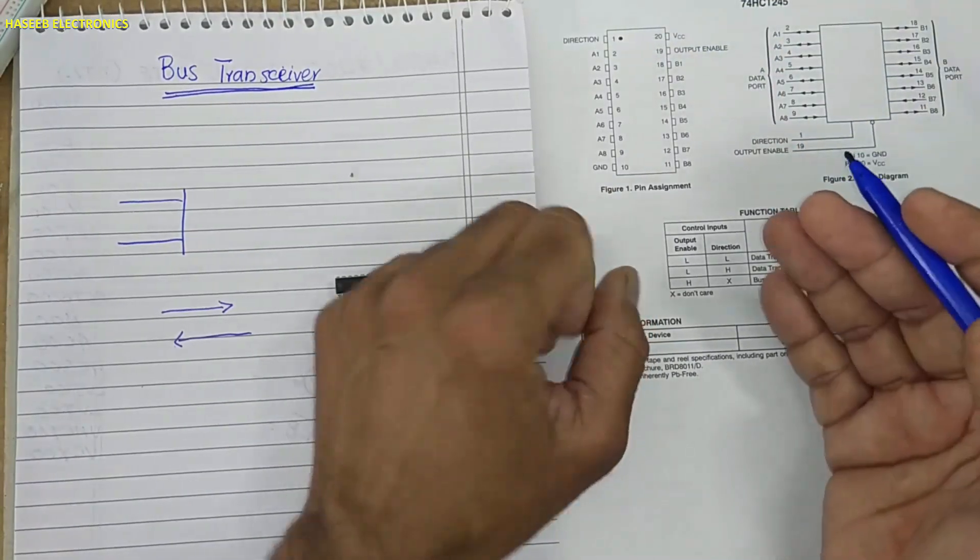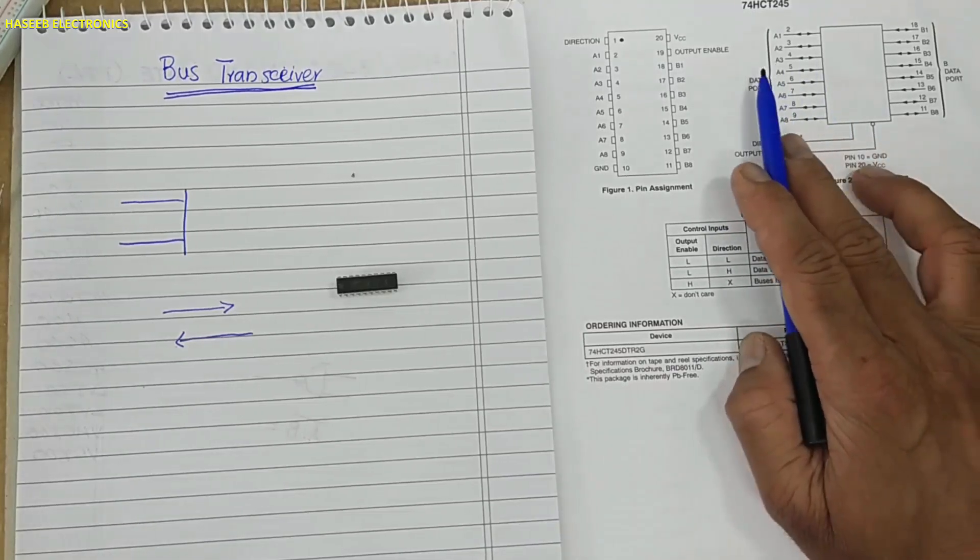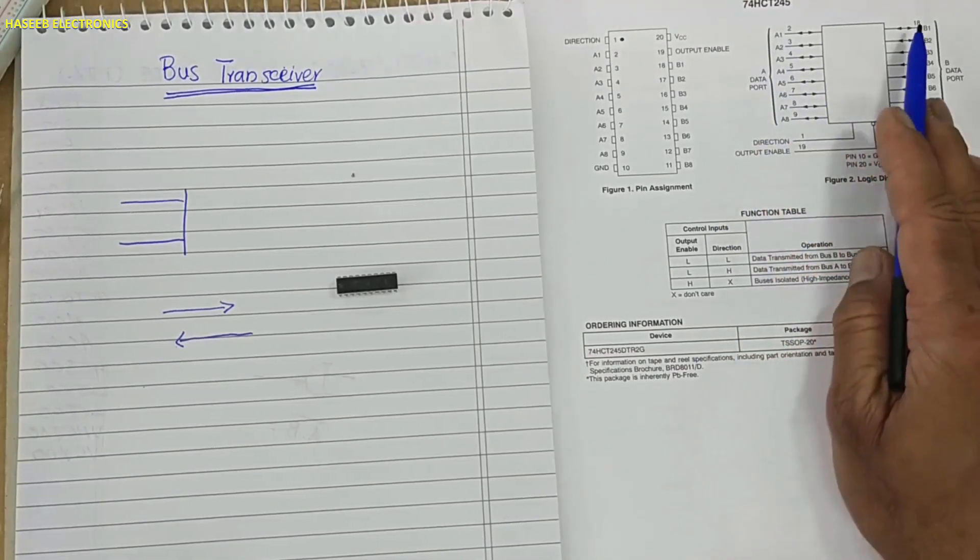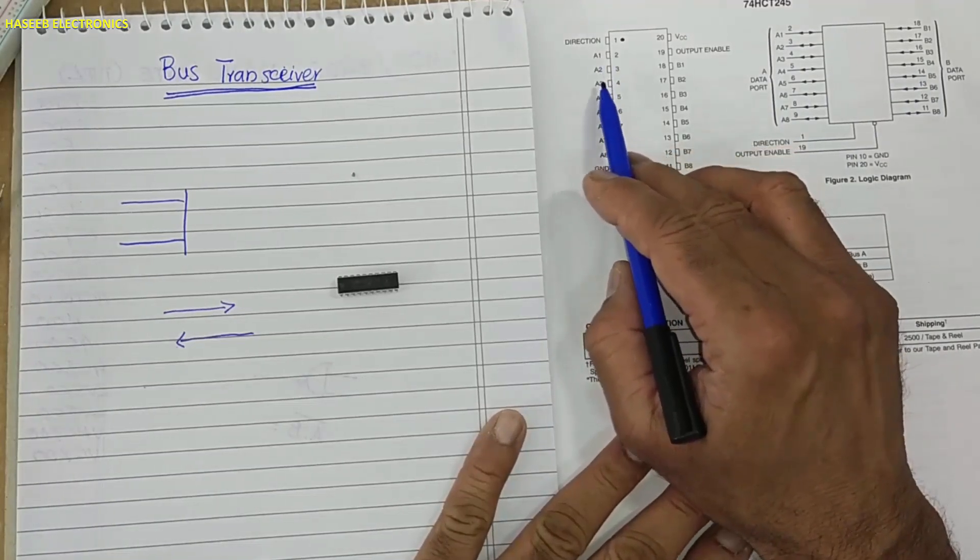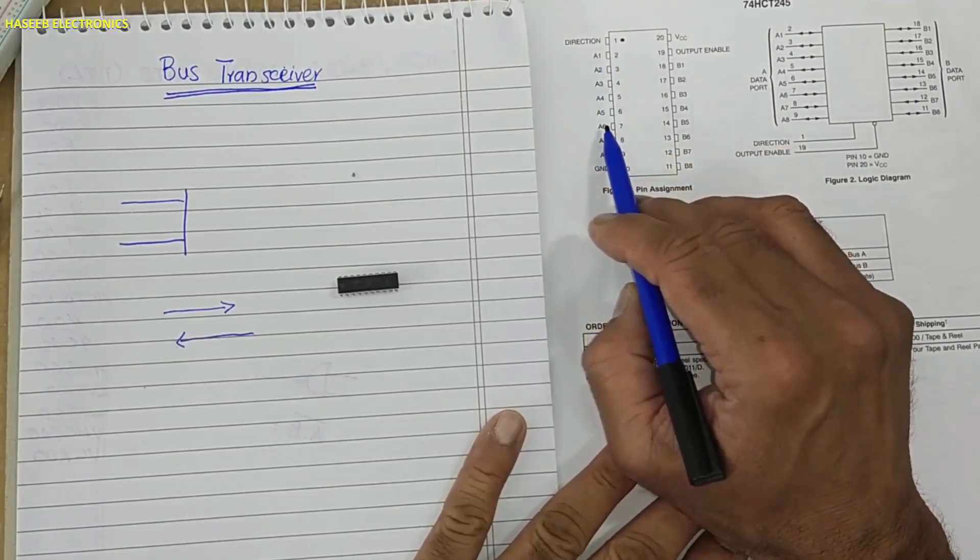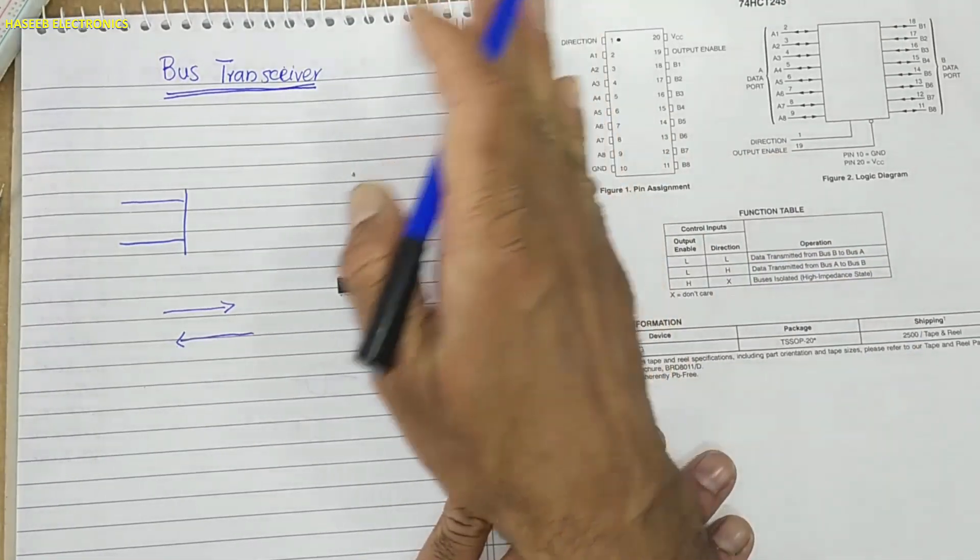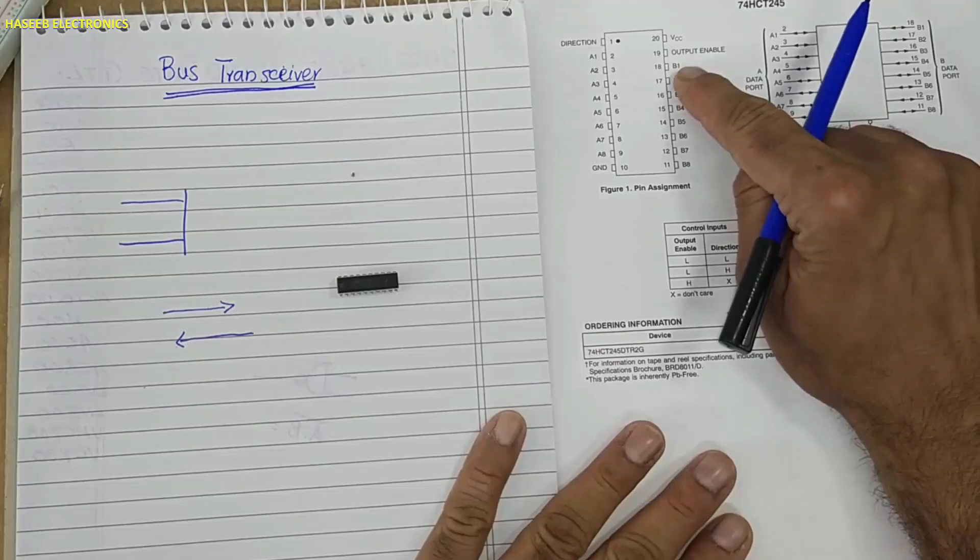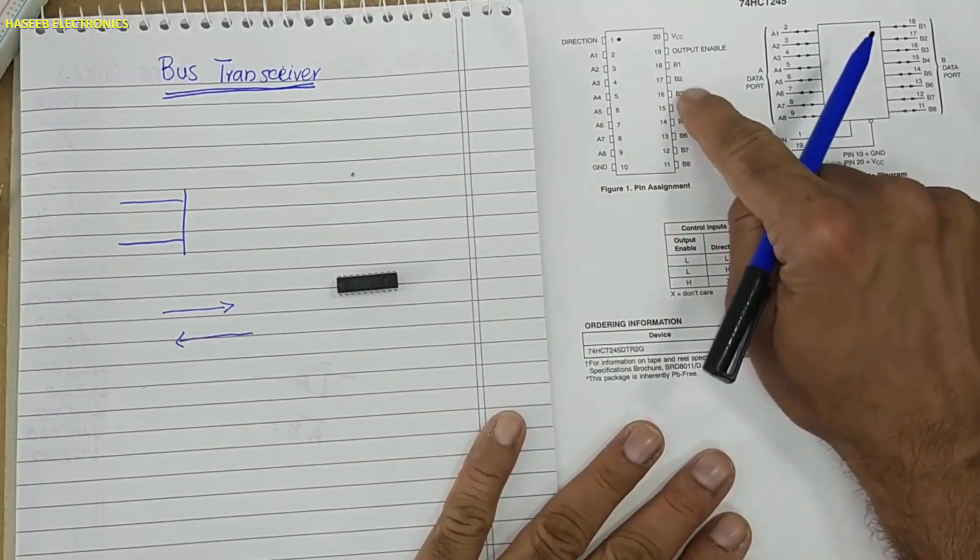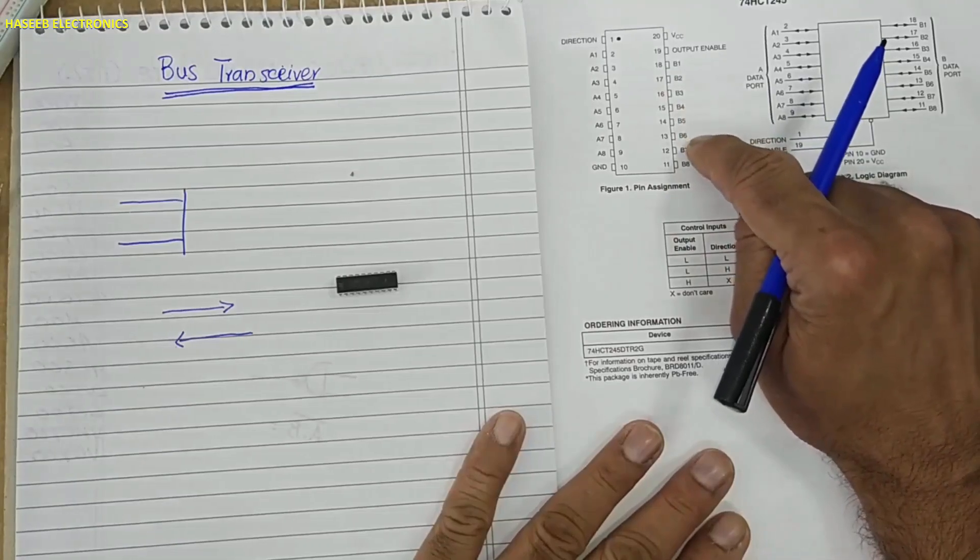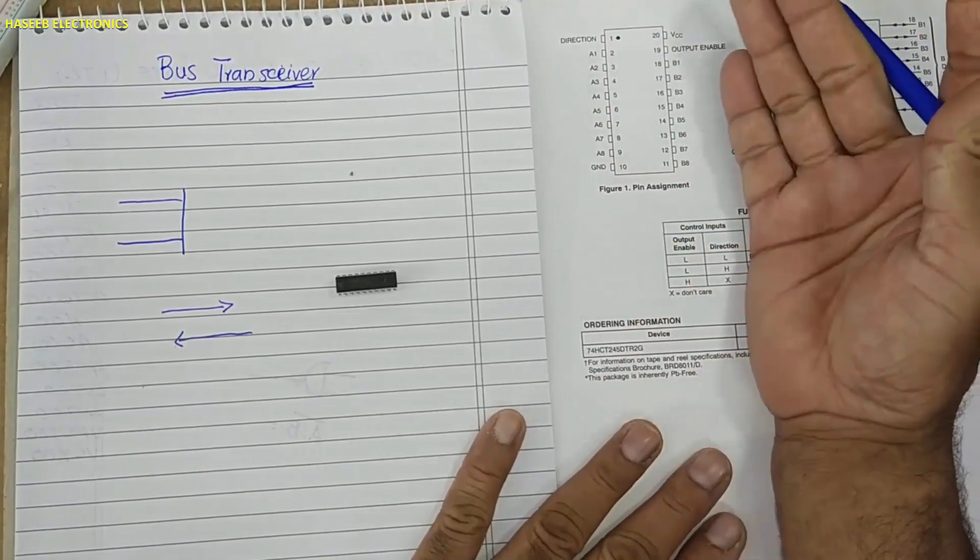Pin 1 and 19 - direction and output enable - these are control inputs to select the function. So it is bi-directional. This is A side, this is B side. Pin number 2 is A1, A2, A3, A4, A5, A6, A7, A8 - 8 lines from A side. Pin number 18 B1, B2, B3, B4, B5, B6, B7, B8. These are B side 8 bits.